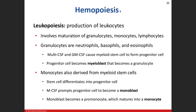Hematopoiesis is the overall production of the formed elements of your blood. The formed elements of your blood are the cells — red blood cells, white blood cells, and platelets. When we talk about the formation of red blood cells, that's going to be erythropoiesis.